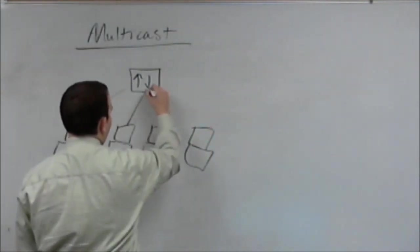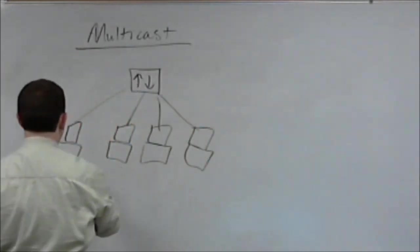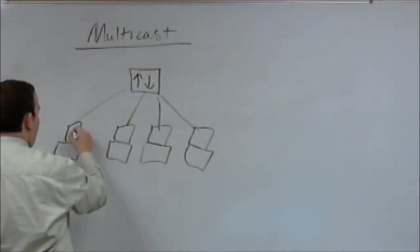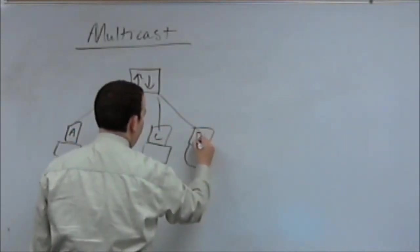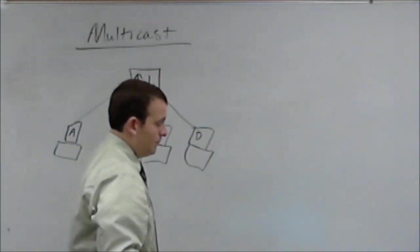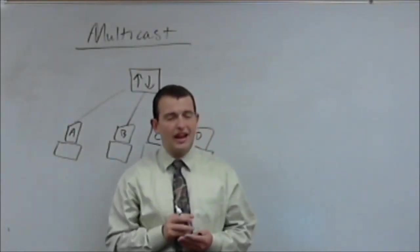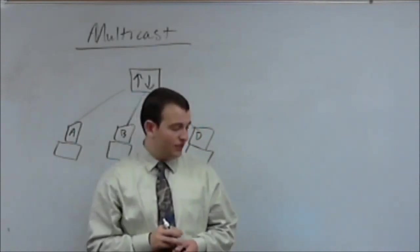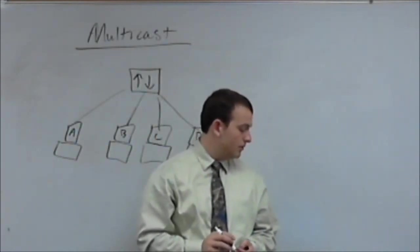Here we've again got four hosts. And let's say host A is sending the packet again. Multicast uses a special range of IP addresses.